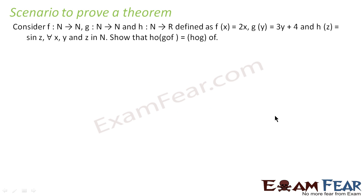We have function f from N to N, g also from N to N, and h from N to R, where f(x) = 2x, g(y) = 3y + 4, and h(x) = 7x.